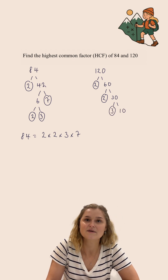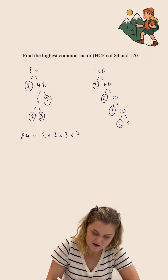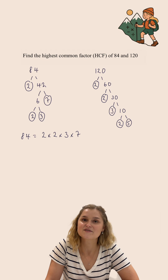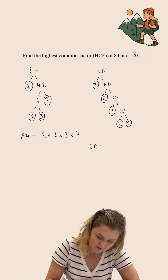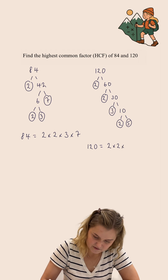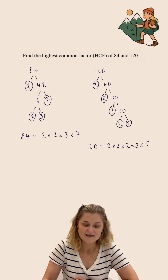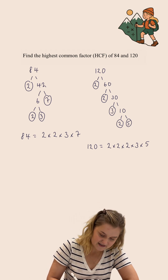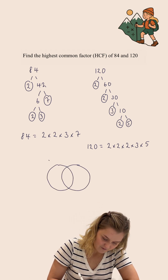3 is prime so we circle that one. And 10 I can split into 2 multiplied by 5. Both of these are prime so we circle both of those. So 120 is equal to 2 multiplied by 2 multiplied by 2 multiplied by 3 multiplied by 5. At this point I need to put these prime factors into a Venn diagram.